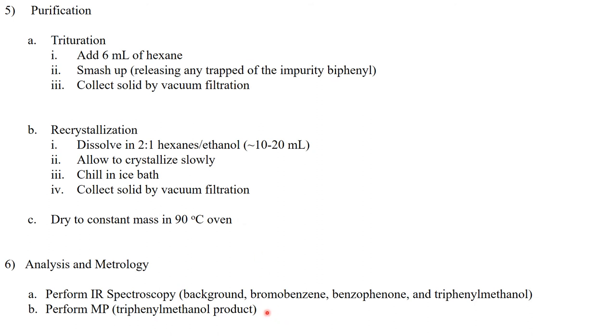We're going to do infrared spectroscopy on our product but we're also going to do it on our starting materials. So we'll do infrared spectroscopy on our triphenyl methanol, our benzophenone, our bromobenzene, and this time we're going to actually collect and save and analyze a background spectrum, meaning an IR spectrum that is of the air. After that we're going to go over to the melting point apparatus and perform a melting point on our triphenyl methanol product.